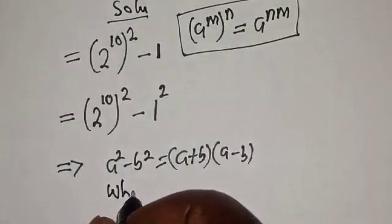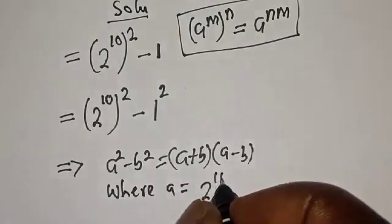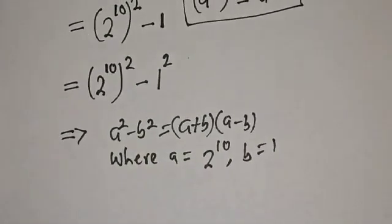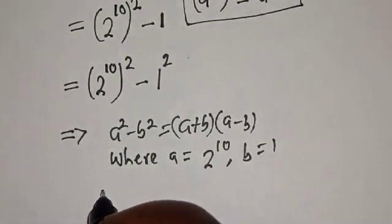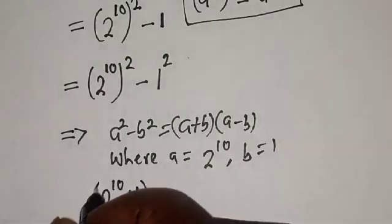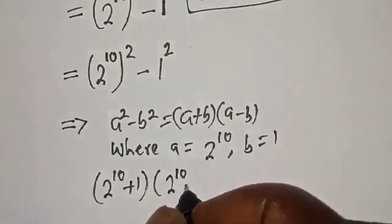Where a = 2^10 and b = 1. This gives us (2^10 + 1)(2^10 - 1).